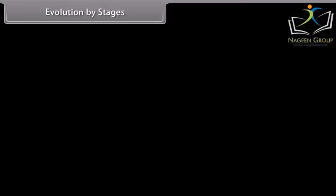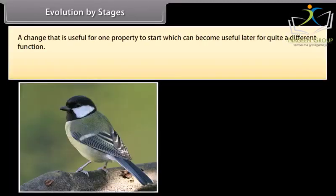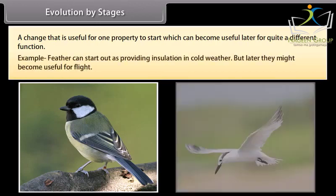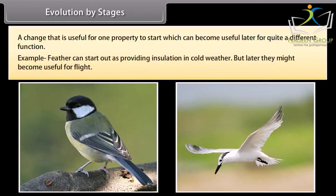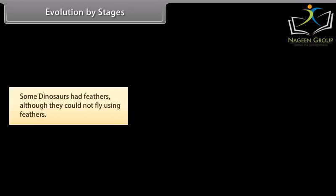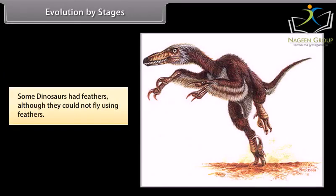Evolution by stages means a change that is useful for one property to start with can become useful later for quite a different function. For example, feathers can start out as providing insulation in cold weather but later become useful for flight. Some dinosaurs had feathers although they could not use them for flying.